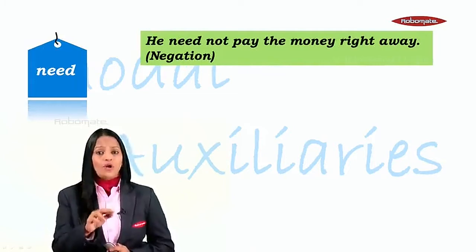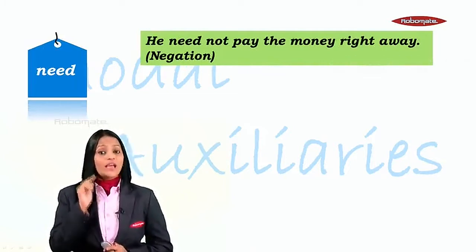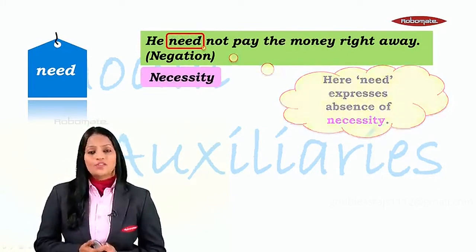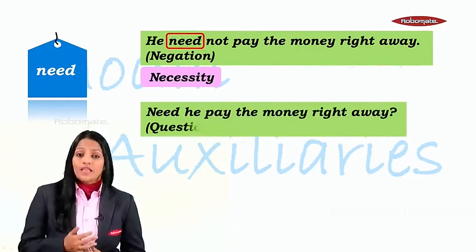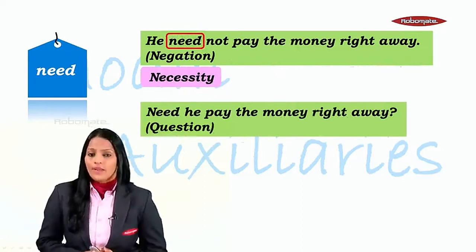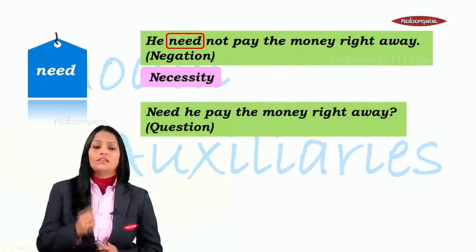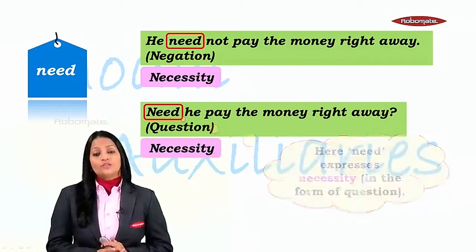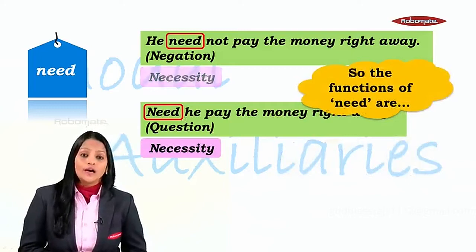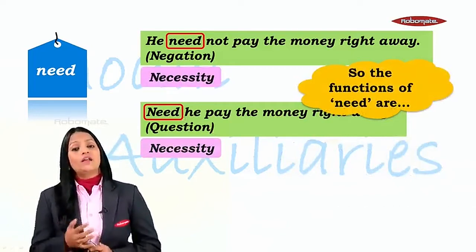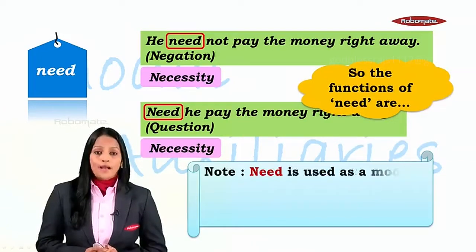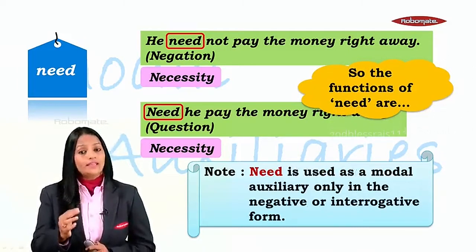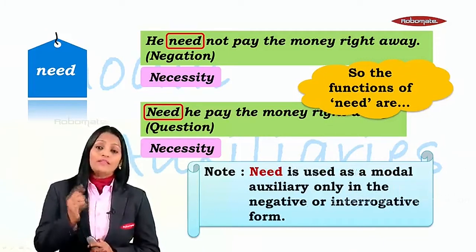Next: 'need.' 'He need not pay the money right away.' 'Need not' is a negation — it expresses absence of necessity. If I say 'Need he pay the money right away?' it's a question, an interrogation, and it shows necessity in the form of a question. The functions of 'need' are necessity-related.